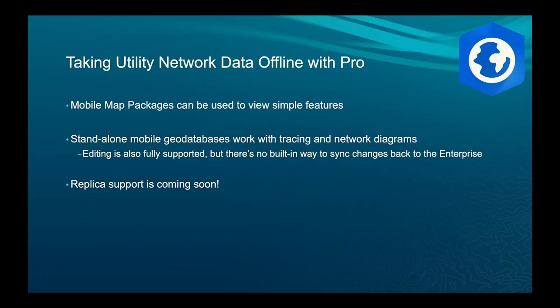You can also take utility network data offline using ArcGIS Pro itself. You can use mobile map packages just to view features, or a standalone mobile geodatabase — with that, you can do tracing and network diagrams. Technically you can also edit it, but there's no easy way to get those changes back up to enterprise, so the real answer is replica support which is coming soon. That said, there are still users who prefer a ruggedized laptop in the field rather than a phone or iPad, and this is definitely a good option for them.